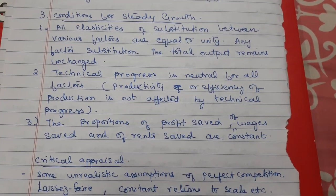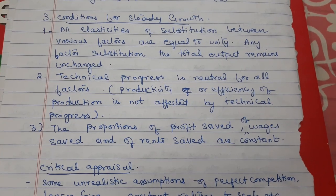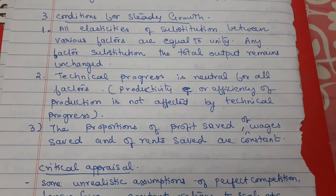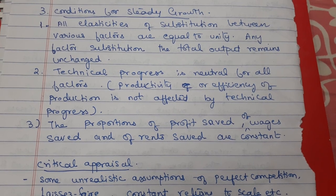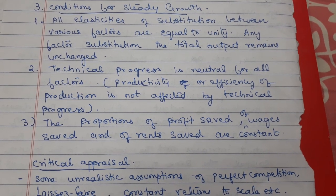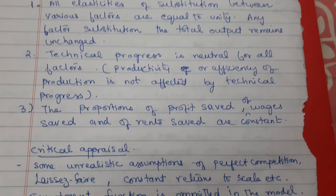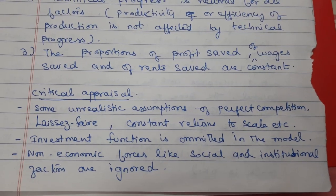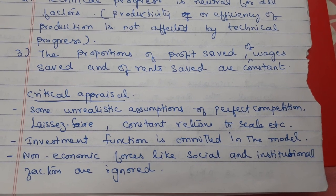The three conditions for steady growth are: first, all elasticities of substitution between various factors are equal to unity — that is, you can substitute capital for labour or labour for capital and total output remains unchanged. Second, technical progress is neutral for all factors — productivity or efficiency of production is not affected by any technical progress year on year. Third, the proportions of profit saved, wages saved, and rent saved are constant.